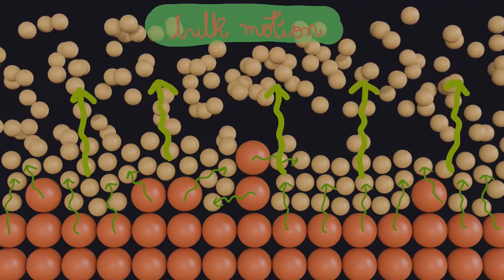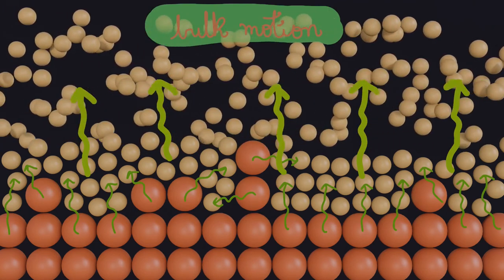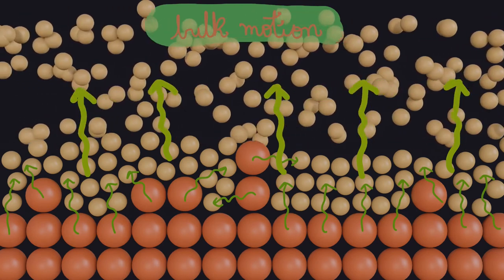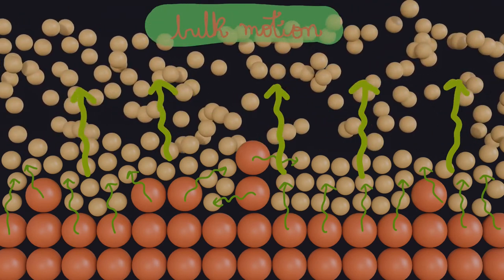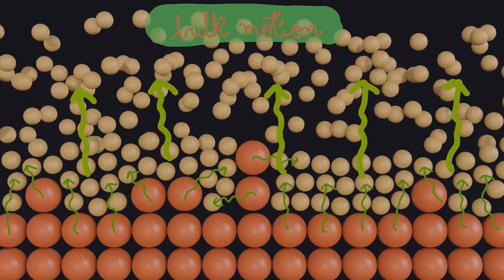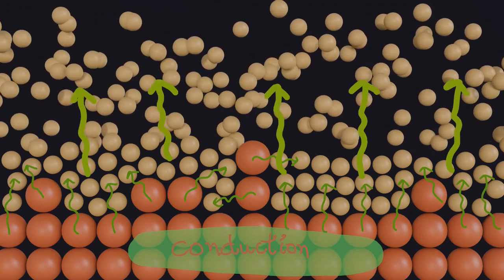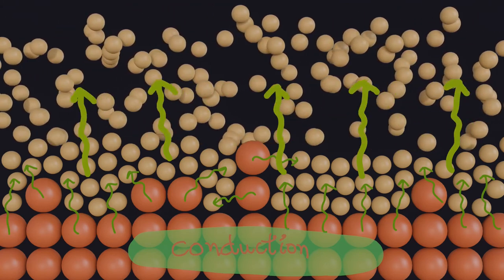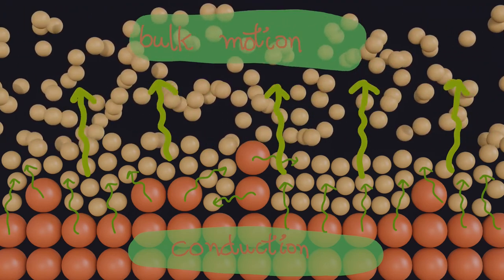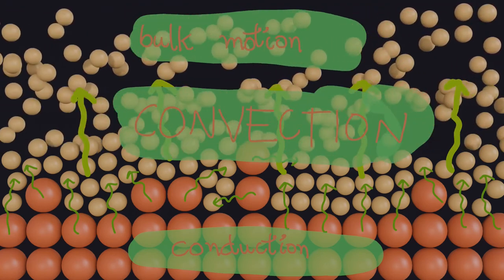This is bulk motion. So the overall transfer of energy from the solid surface to the adjacent fluid molecules due to conduction, and then the carrying away of heat from these adjacent molecules to the molecules that are in motion—all these effects combined is called convection.